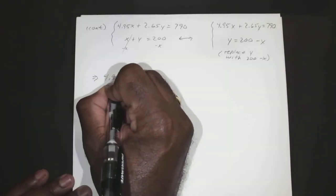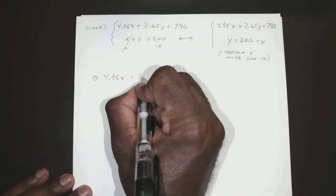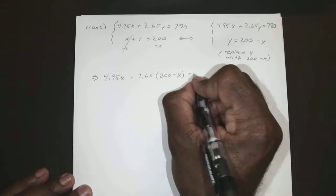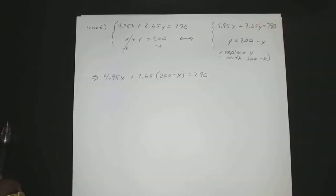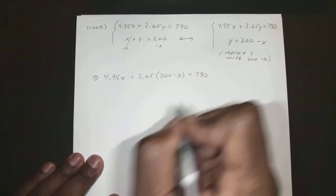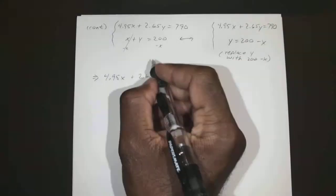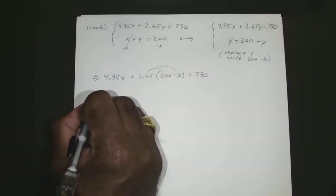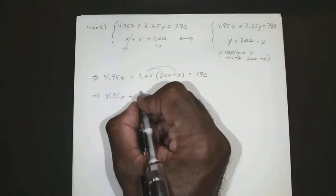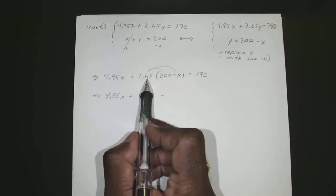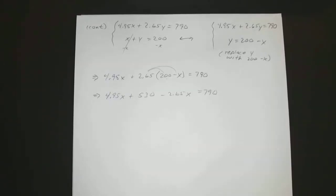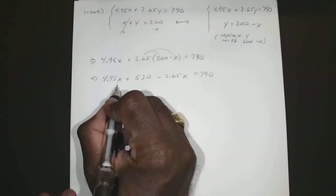So that gives us 495X plus 265, and instead of Y, 200 minus X equals 790. So now we just go ahead and solve for X. We distribute our 265: that's 495X plus 265 times 200 is 530, minus 265 times X, which is 265X, equals 790. We can just go ahead and combine these like terms.